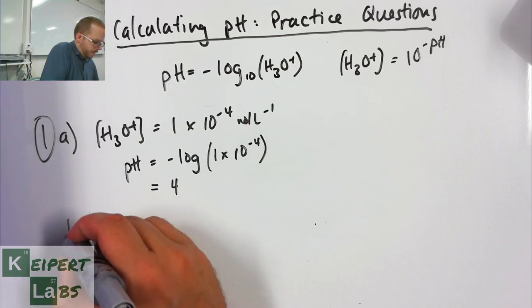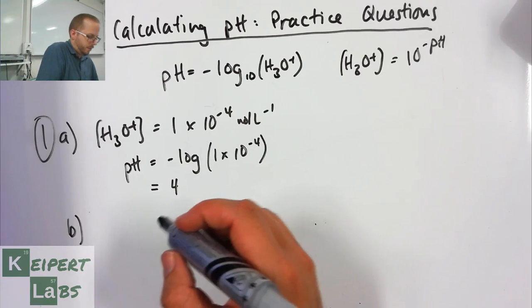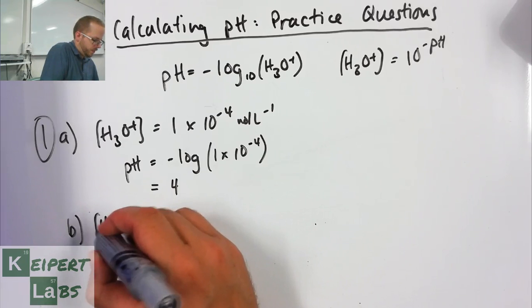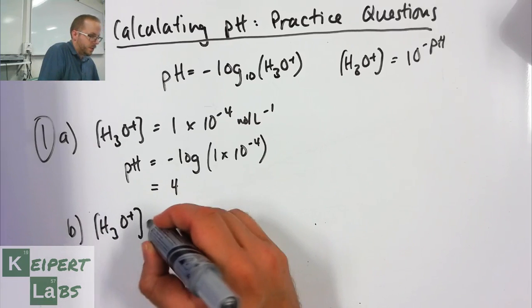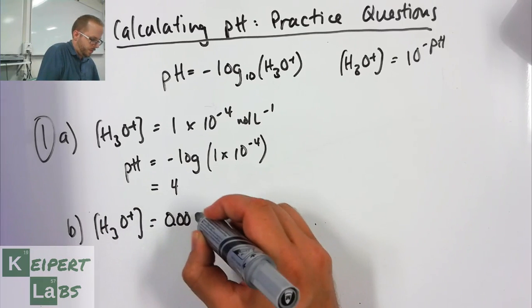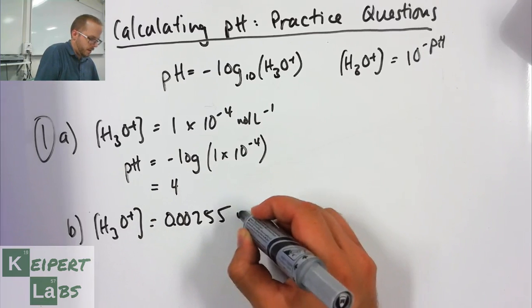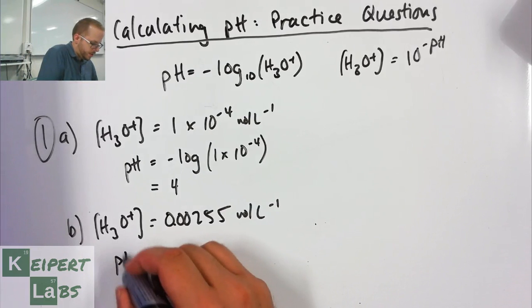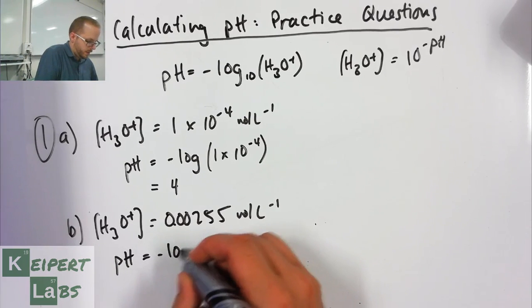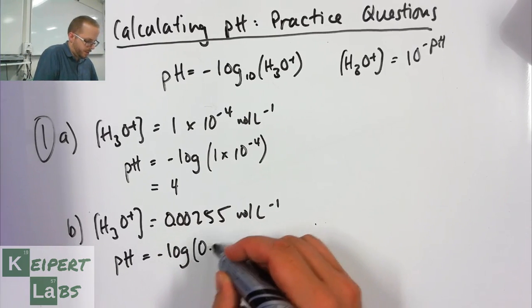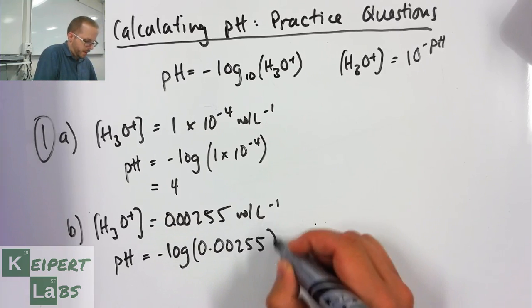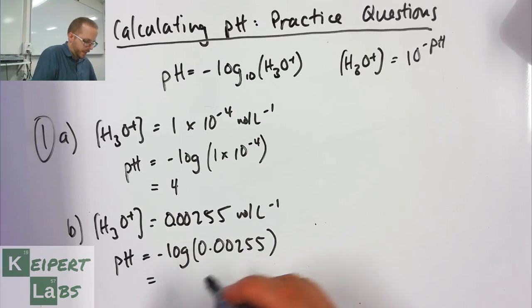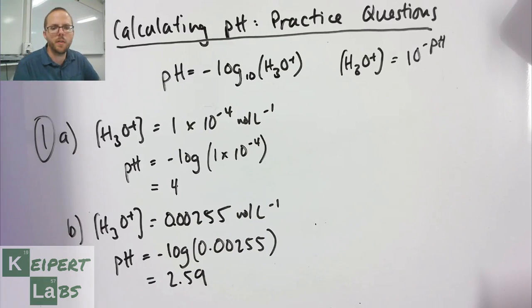Now if I have a look at part B, I've got hydronium ion concentration of 0.00255 moles per liter. Not as straightforward - we do need to make sure we do the calculation for this one. So pH equals minus log base 10 of 0.00255, and I put that into my calculator and I get a value of 2.59.